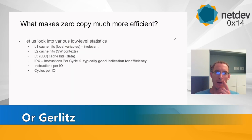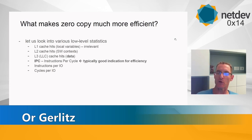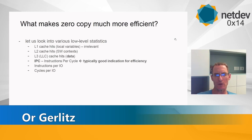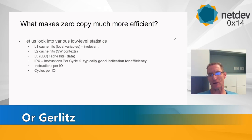Here is the heart of the presentation: what makes zero copy so much more efficient? We looked at various low-level statistics — some from perf, some from hardware monitor drivers. Looking at caching: a typical system has L1, L2, and last-level cache. In our SoC, L1 is very small and tends to be occupied by local variables. L2 typically holds software context or metadata for transactions. This has some relevance, but less so in storage workloads than in packet processing, where you might have 100–200 million packets per second.